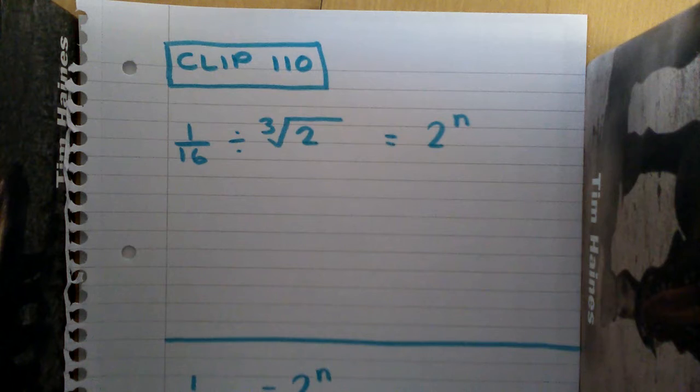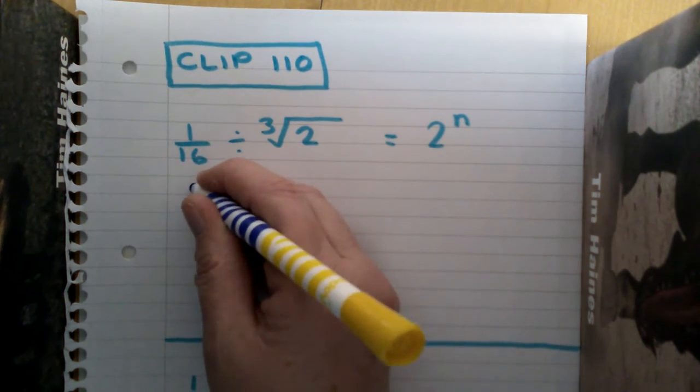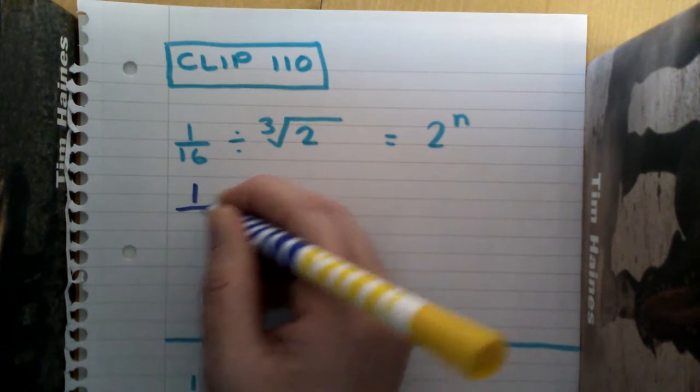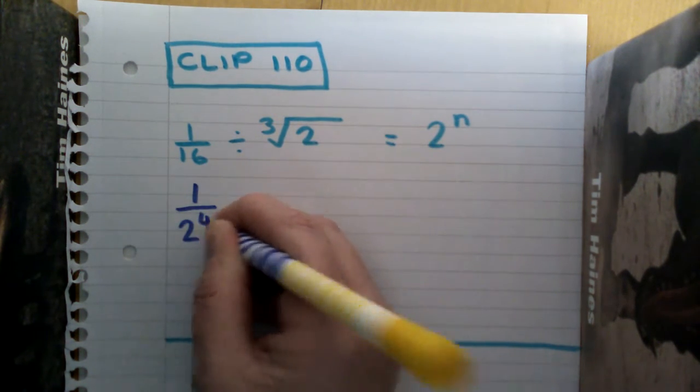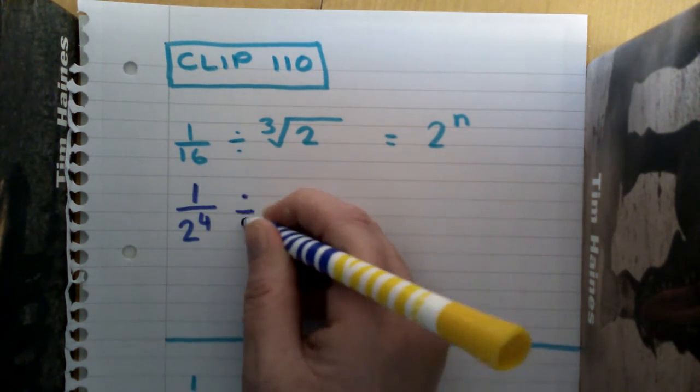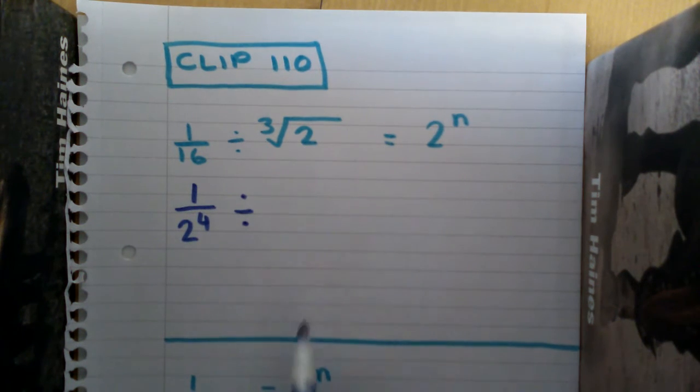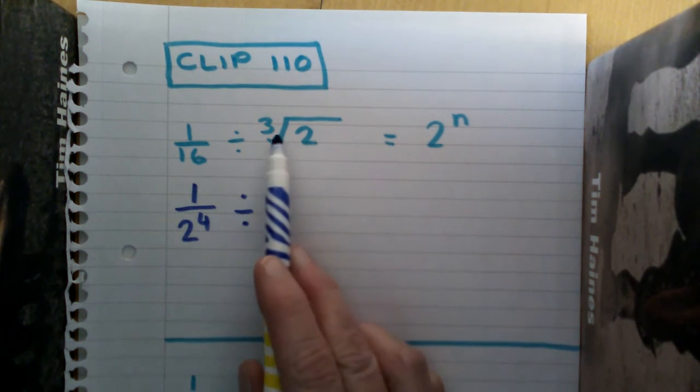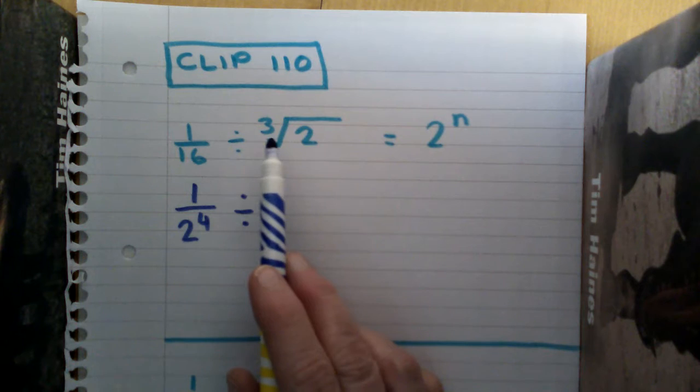So first thing is, how many times do I multiply by 2 to get 16? We go 2, 4, 8, 16, so that's 2 to the power 4. So I can change that 16 to 1 over 2 to the power 4 divided by...